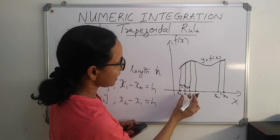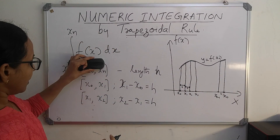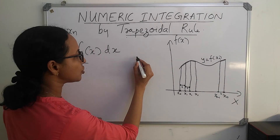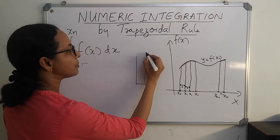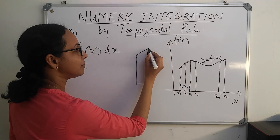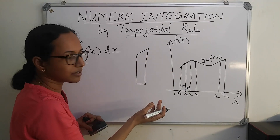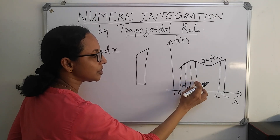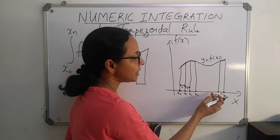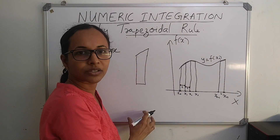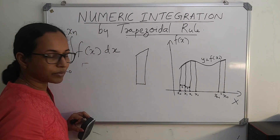I have divided this region into trapezoids. A trapezoid is a geometrical figure where two sides are parallel and the other pair is not parallel. I have divided this region into such trapezoids. Therefore, the area under this curve will be equal to the sum of the areas of these trapezoids. We have a formula for finding the area of a trapezoid.